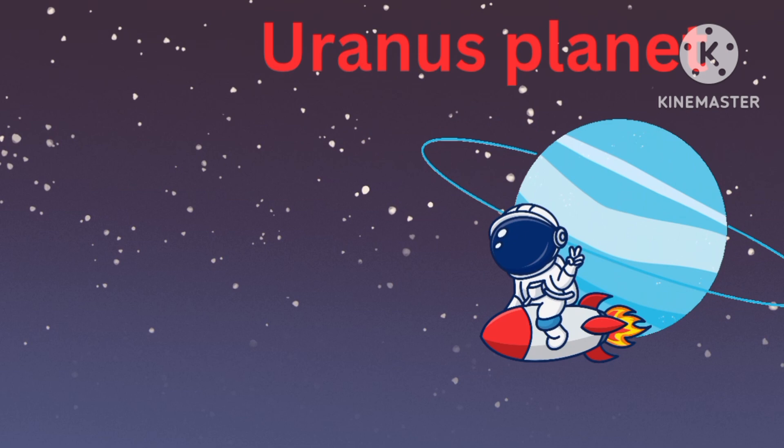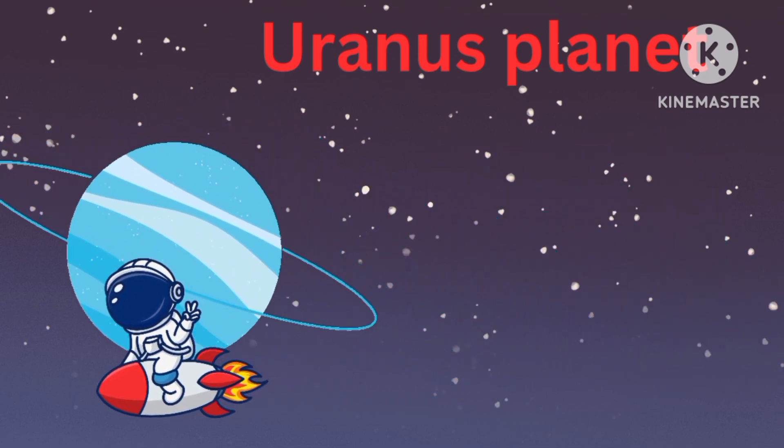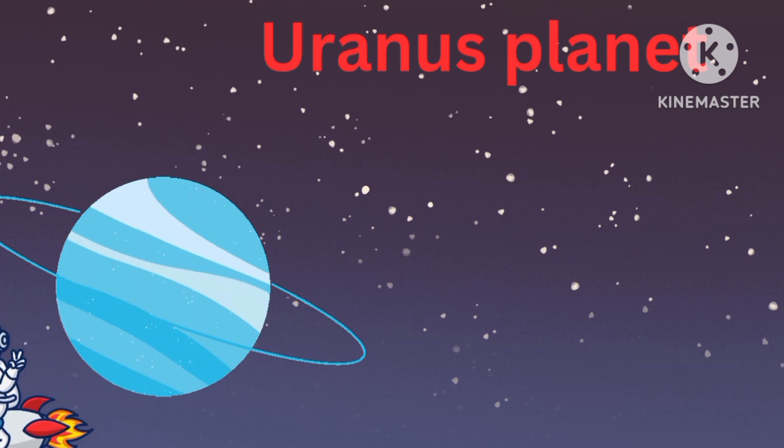Uranus is the seventh planet from the sun and the third largest planet in our solar system.